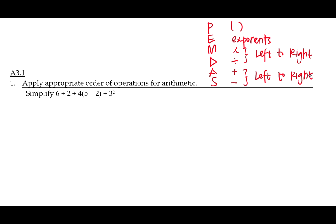Okay so let's do this example here. Simplify 6 divided by 2 plus 4 times the quantity 5 minus 2 plus 3 squared.